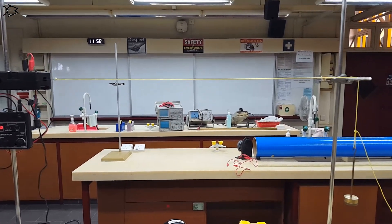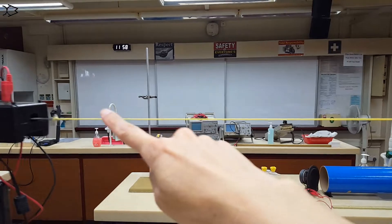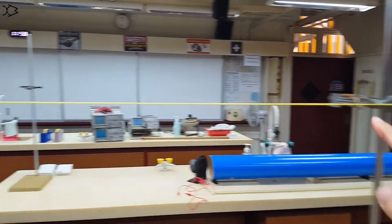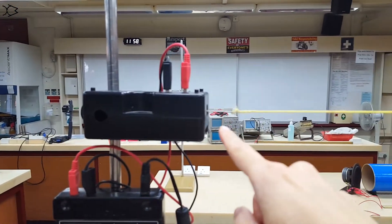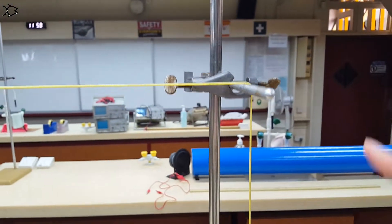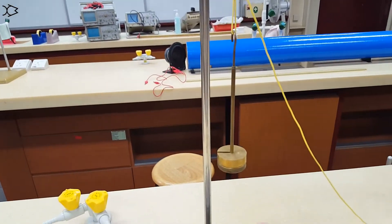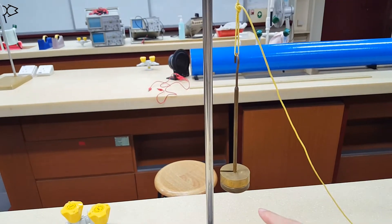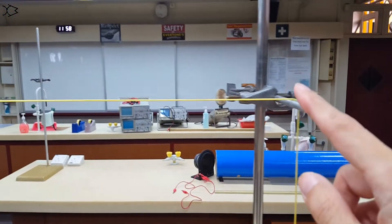Alright, let me describe the setup here. So we have a string here. One end of it is connected to a vibrator. And the other end, we have attached the weights to it. This is just to fix the tension in the string.